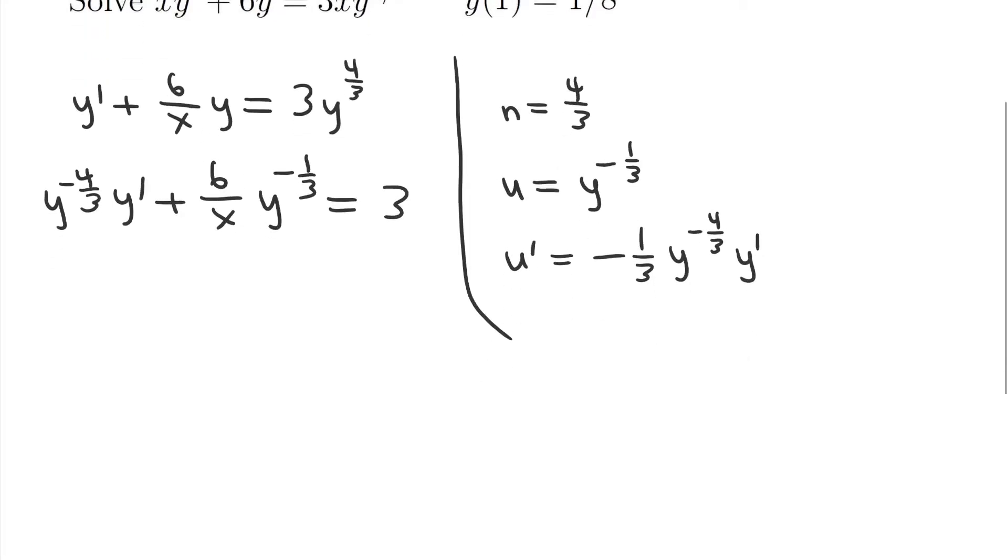And then notice here that this part on the left is, right, if I take this equation, I solve it for y to the 4 thirds y prime, I get negative 3u prime. Just like that. So this is going to be negative 3u prime plus 6 over x. And notice y to the negative 1 third is just u. And that's equal to 3.